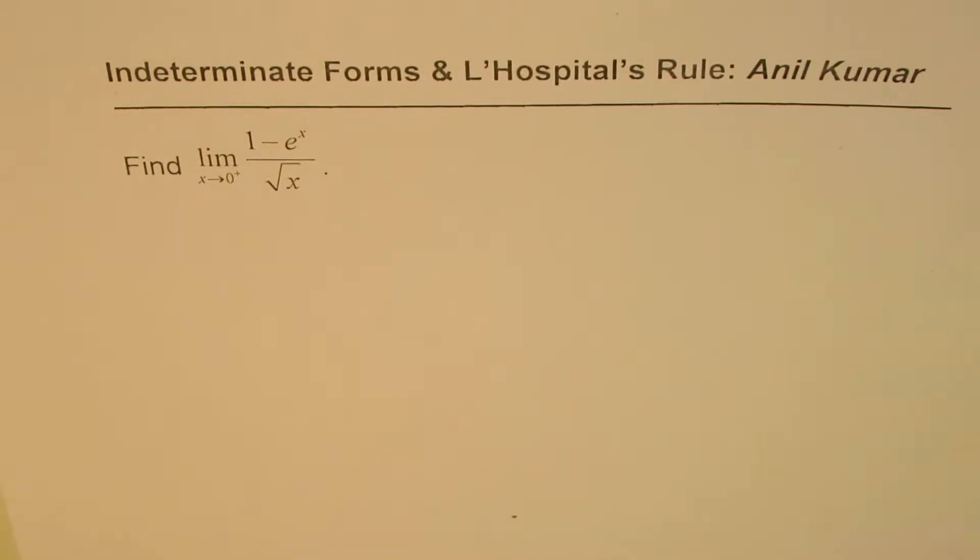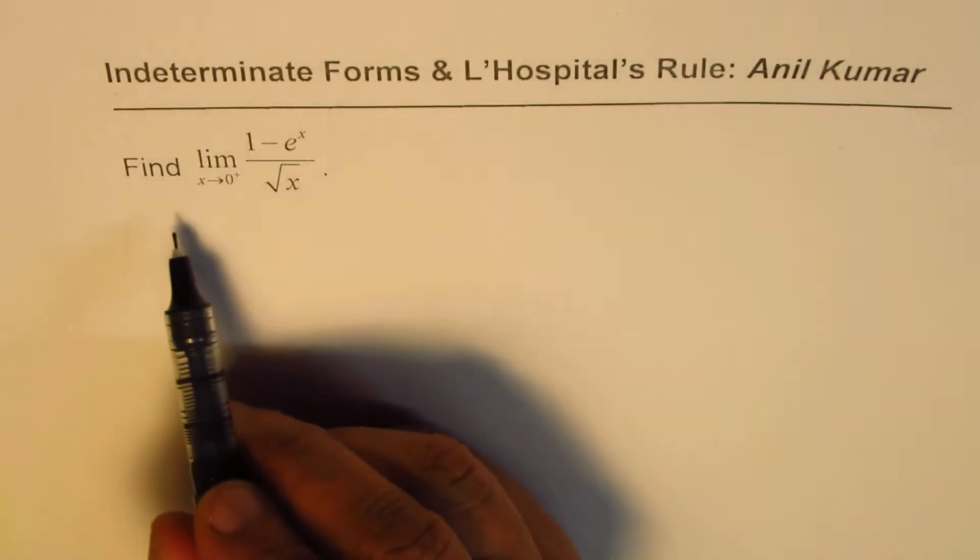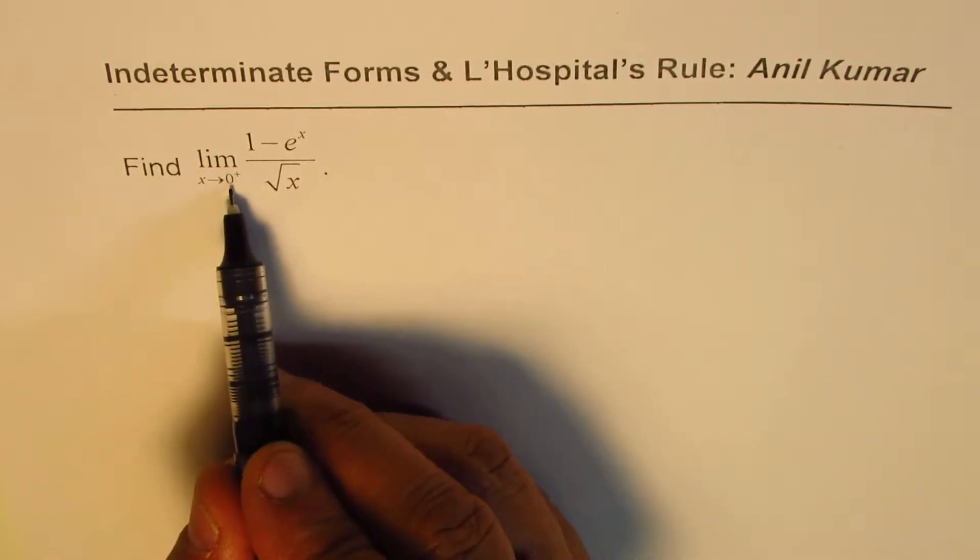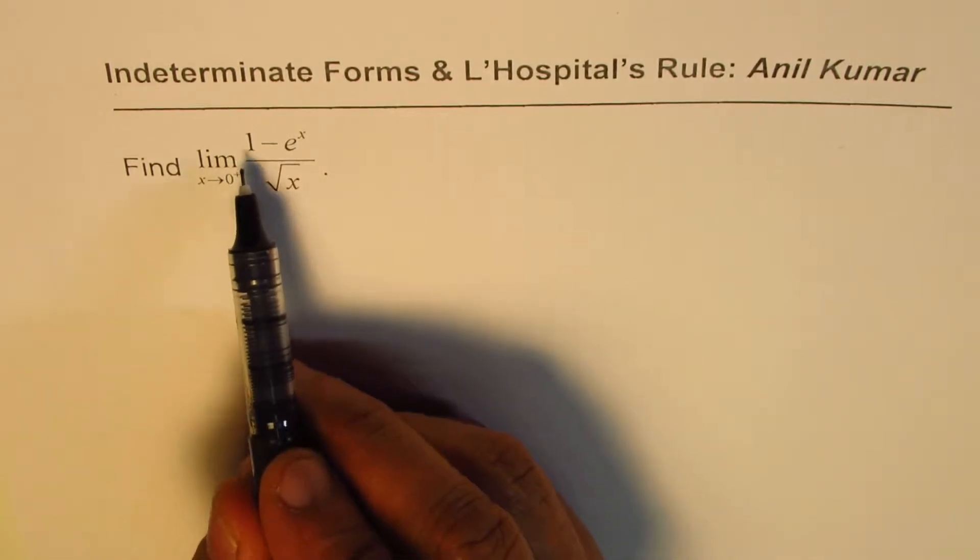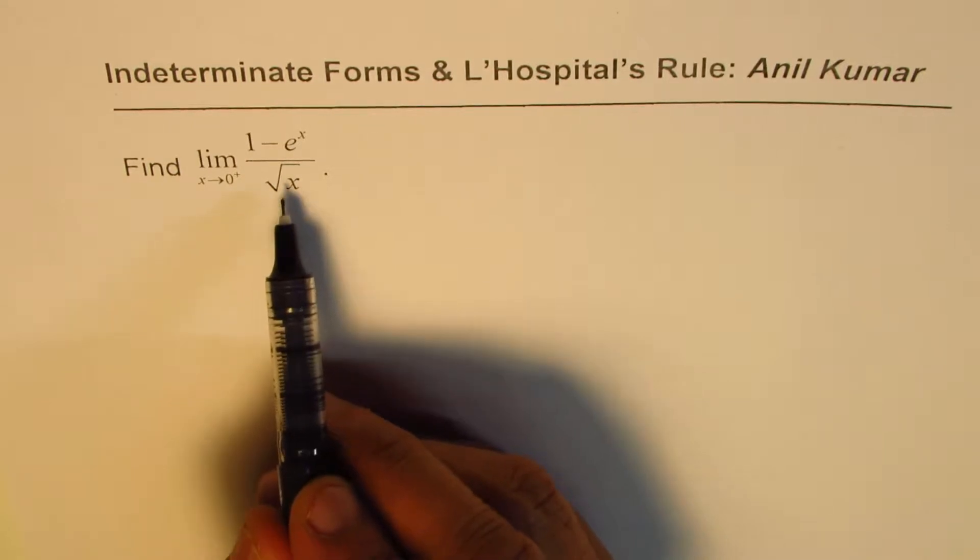I'm Anil Kumar sharing with you videos on application of L'Hospital's Rule. The question here is find limit when x approaches 0 from the right side (0+) of 1 minus e^x divided by square root of x.